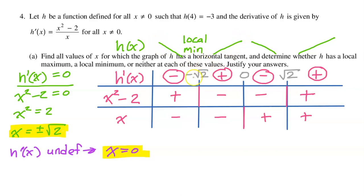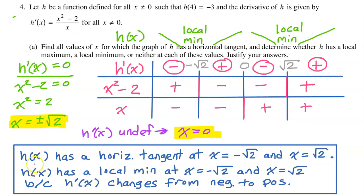Since h goes down and then up, the critical value of negative radical 2 is a local min. Similarly, radical 2 is also a local min. However, be careful when you write your summary statement — do not justify a local min by saying h is decreasing and then increasing. Instead, stick to the first derivative and say h has a local min at negative radical 2 and at positive radical 2 because h prime changes from negative to positive.